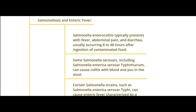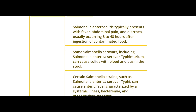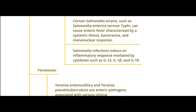Salmonella enterocolitis typically presents with fever, abdominal pain, and diarrhea, occurring 8 to 48 hours after ingestion of contaminated food. Some serovars, including Enteritidis and Typhimurium, can cause colitis with blood and pus in the stool. Certain Salmonella strains such as Salmonella enterica Typhi can cause enteric fever — a systemic illness with bacteremia and mononuclear response — inducing a high inflammatory response mediated by cytokines such as IL-2, IL-1β, and IL-18. A specific video on enteric fever and salmonellosis will follow.